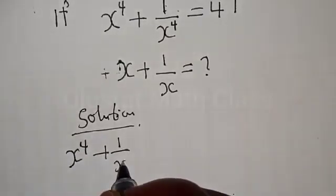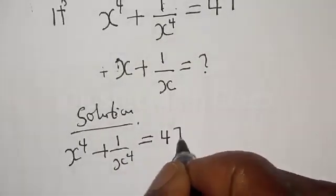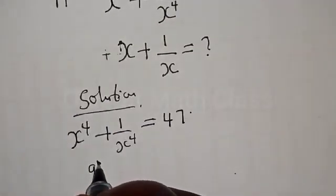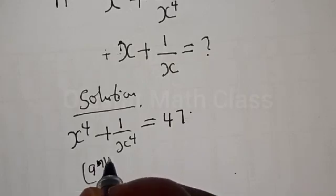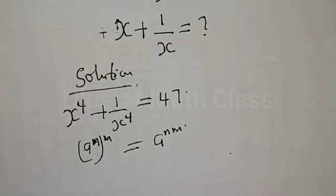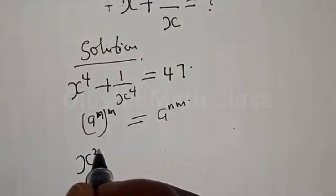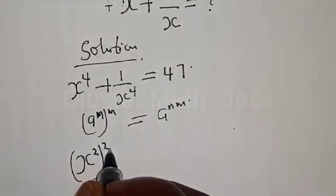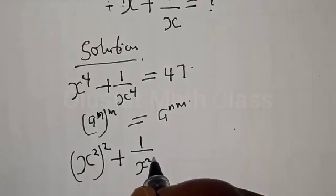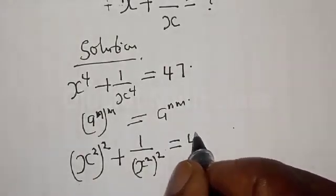We have s raised to power 4 plus 1 over s raised to power 4 is equal to 47. Note that s raised to power 4 can be expressed as s squared, squared. So we have (s²)² plus (1/s²)² is equal to 47.